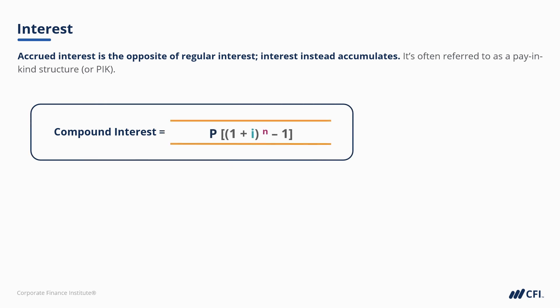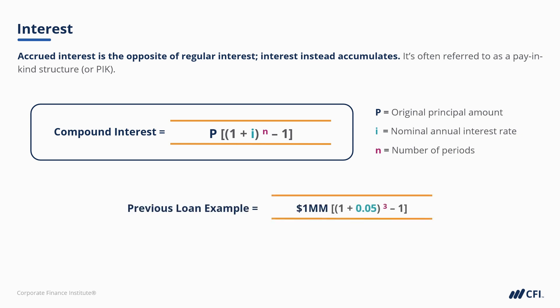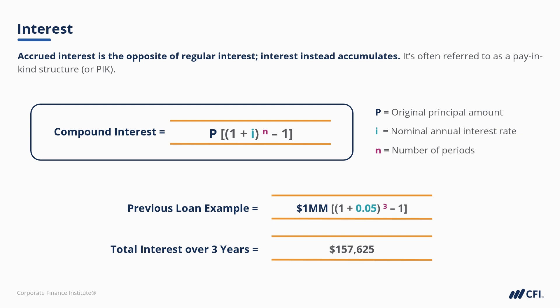That's where compound interest comes in. Compounding is when interest is charged on top of interest. The formula for calculating compound interest is P times (1 plus i) to the power of n, minus 1 — where P equals the original principal amount, i equals the nominal interest rate, and n equals the number of periods. In our example, this is 1,000,000 times (1 plus 0.05) to the power of 3, all minus 1, which equals $157,625.